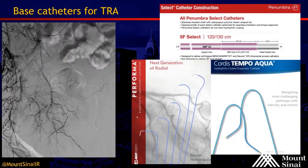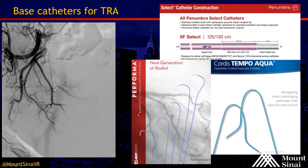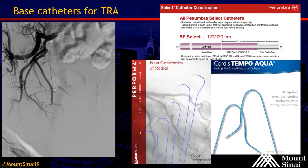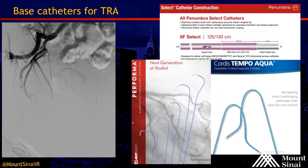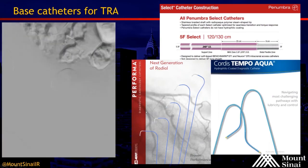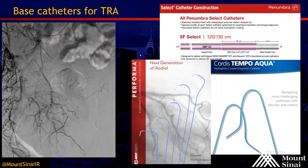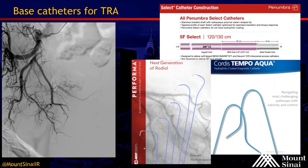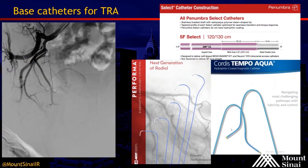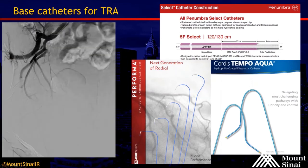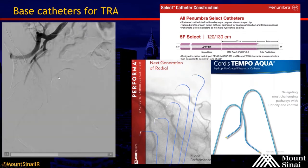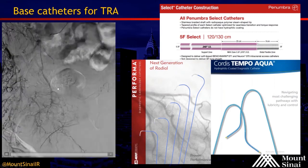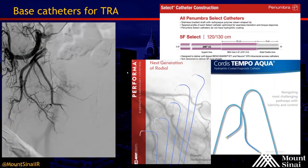In terms of radial access, we've had very little issue even with tall patients. Most of the catheters I use in my lab for radial access are between 120 and 130 centimeters in length, and with the 150 cm balloon occlusion microcatheter, we can accomplish pretty much anything with regard to embolization in these cases.